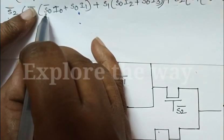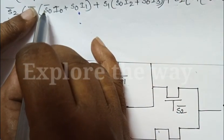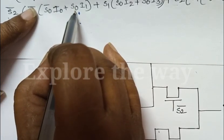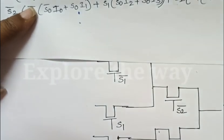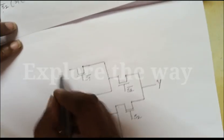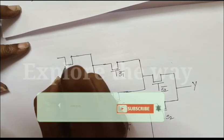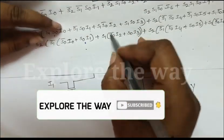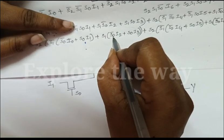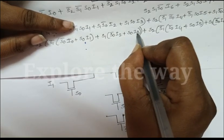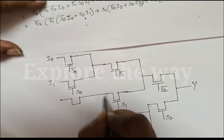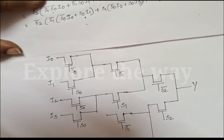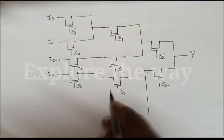Now, when S0 is 0, I0 is the output. When S0 is 1, I1 is the output. We will draw this. And from the second term, when S0 is 0, I2 is active, and when S0 is 1, I3 will be active. Similarly for the remaining terms.